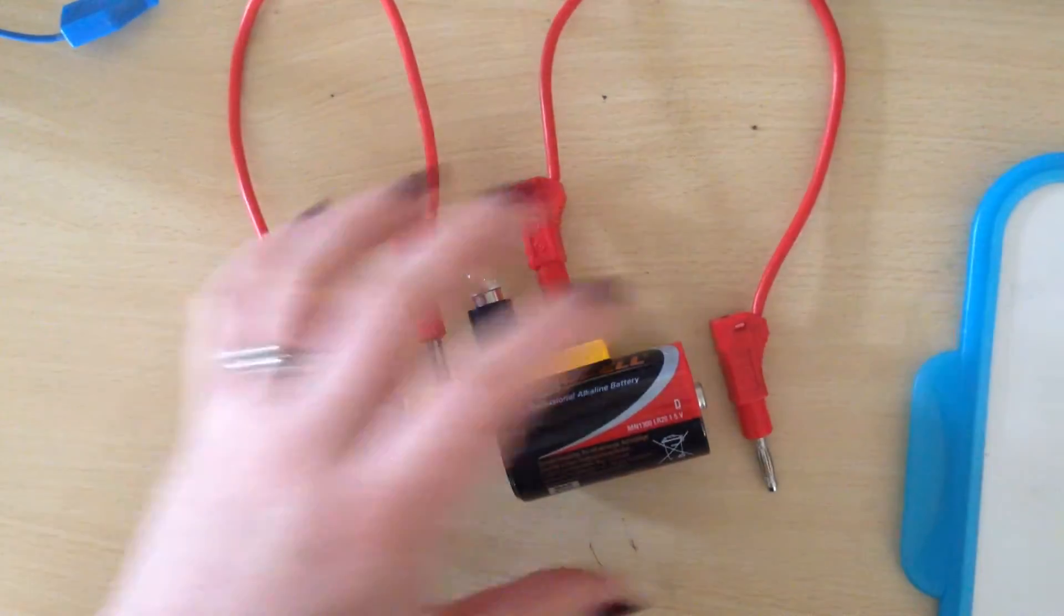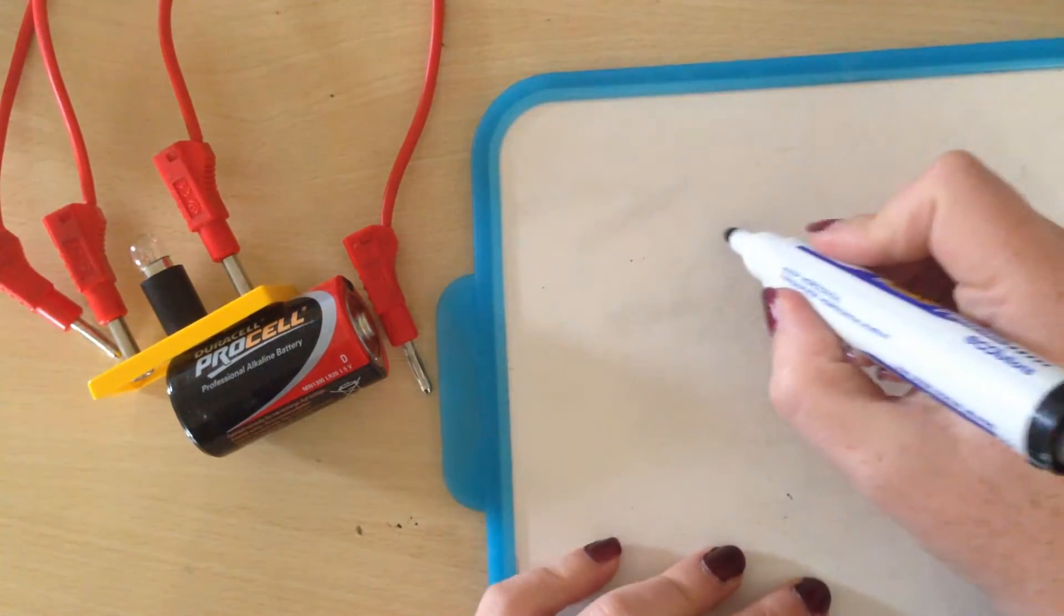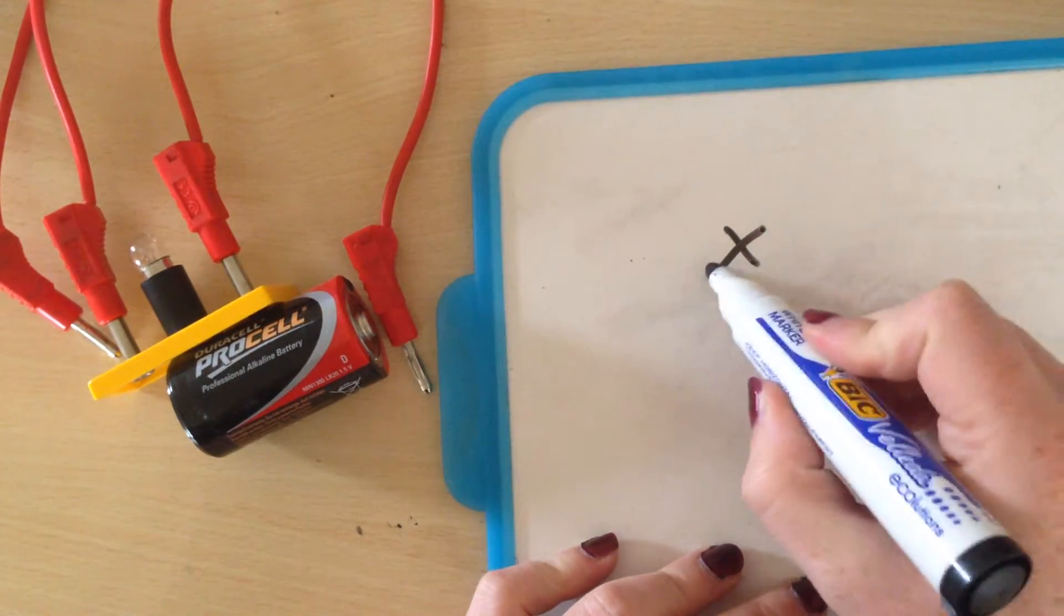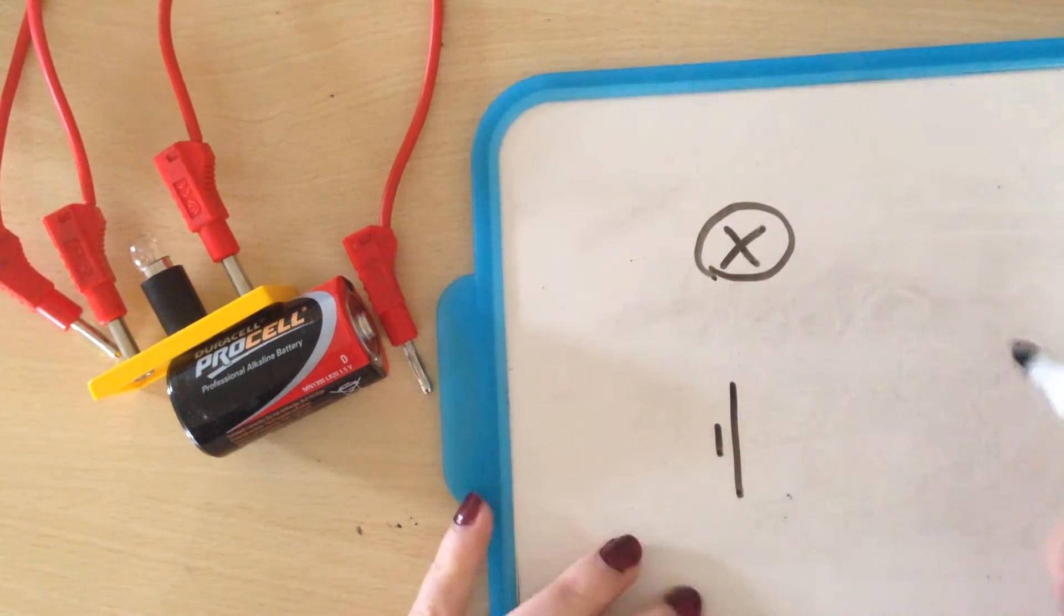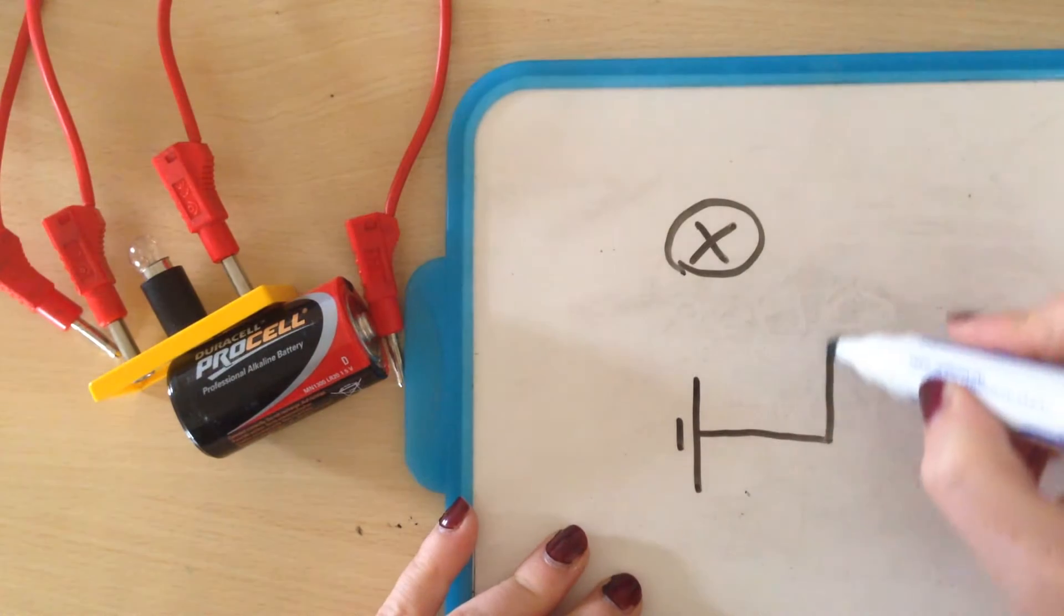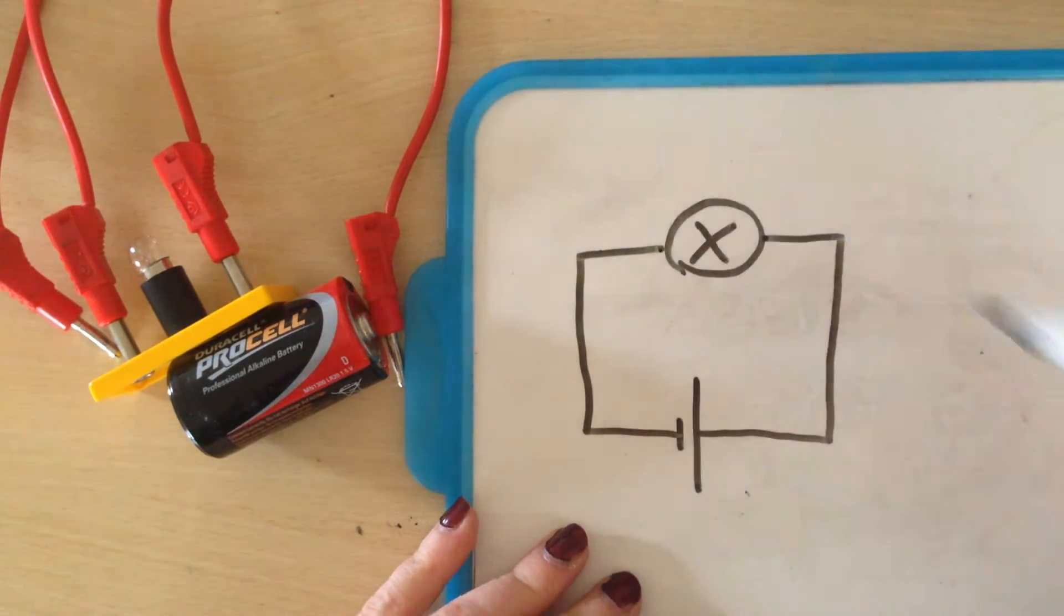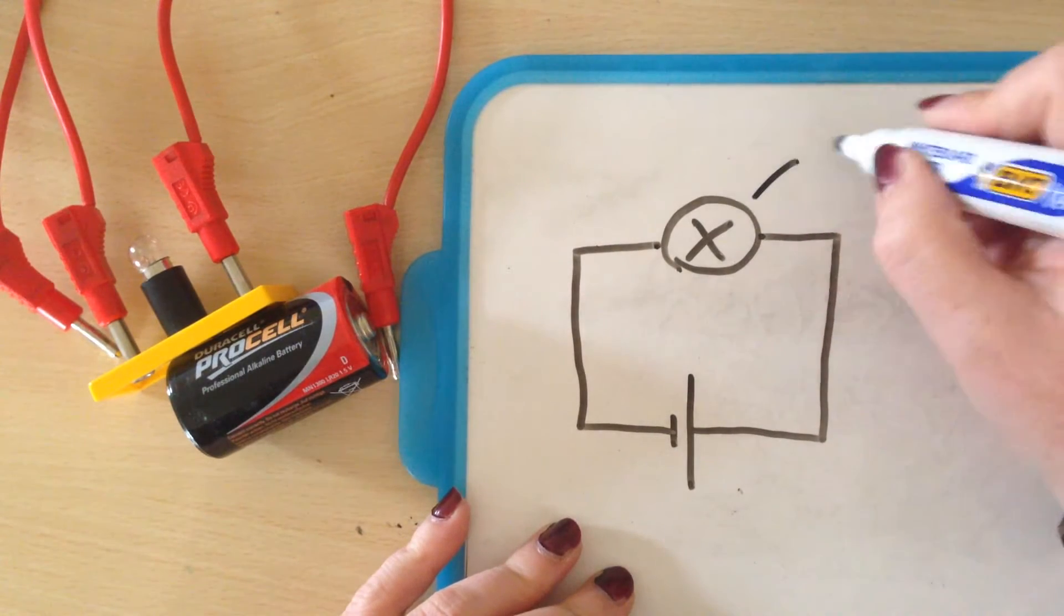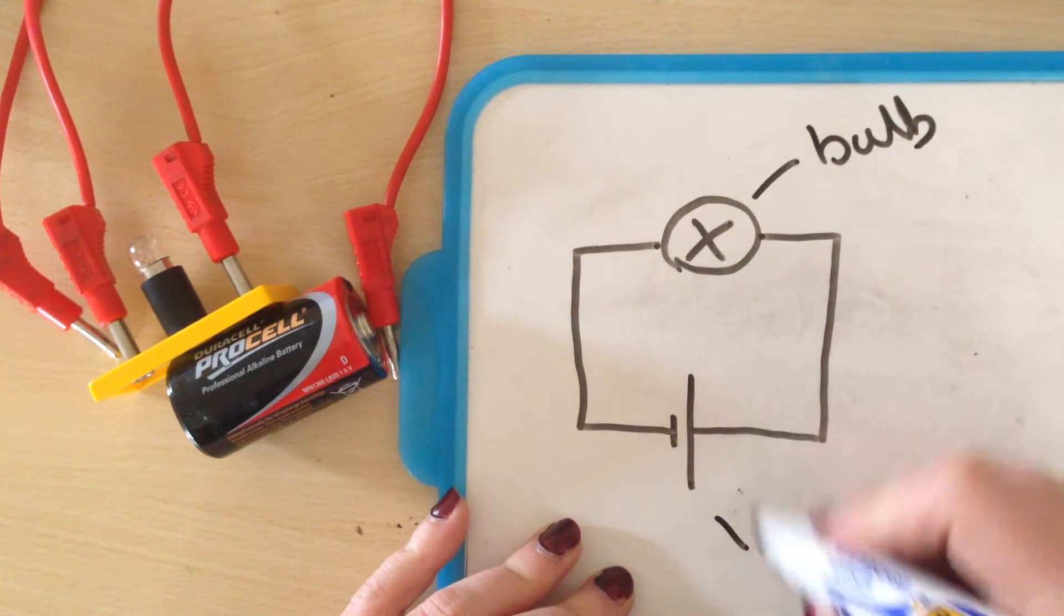Now if we want to draw this as a circuit, I'll just keep that here as reference. The symbol for bulb is a cross with a circle around it, the symbol for a battery is a little line then a big line, and then we always join these up in kind of like a square or a rectangle shape. This is our bulb and this is our cell or battery.